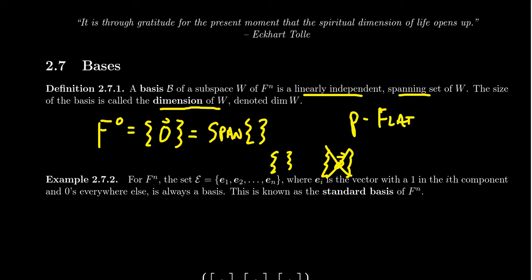And by technicality, by default, the empty set actually is an independent set. So it's independent and it does span the zero space. So the empty set is going to be a basis for the zero space. And as it contains nothing, this is what we mean by zero-dimensional here.